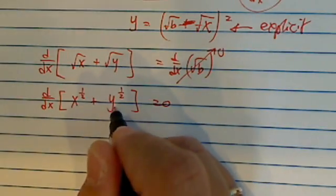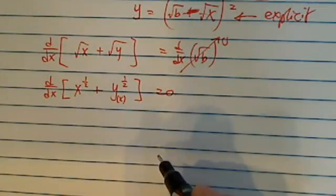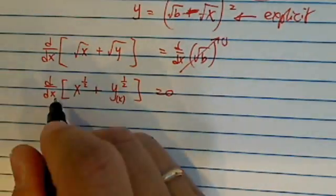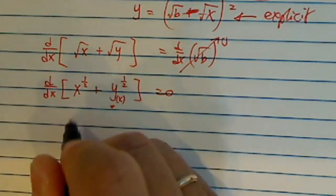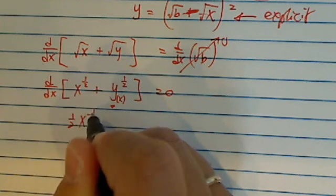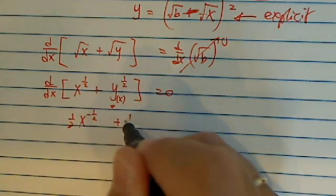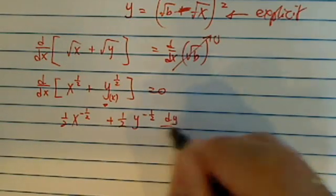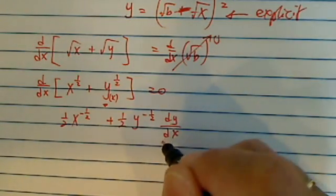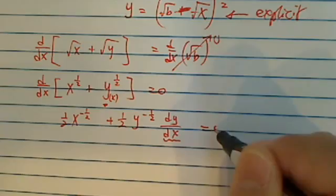When we take derivative of this one, we have to remember y is a function of x. So when we take derivative for this term, we do have to use chain rules. The first term is pretty easy, and then the second term we have y to the minus half over here, and here's the implicit part, dy/dx, because this is the chain rule. Equal to zero.